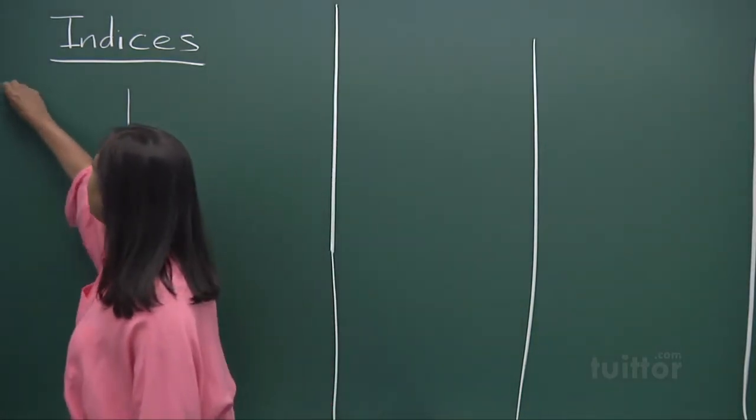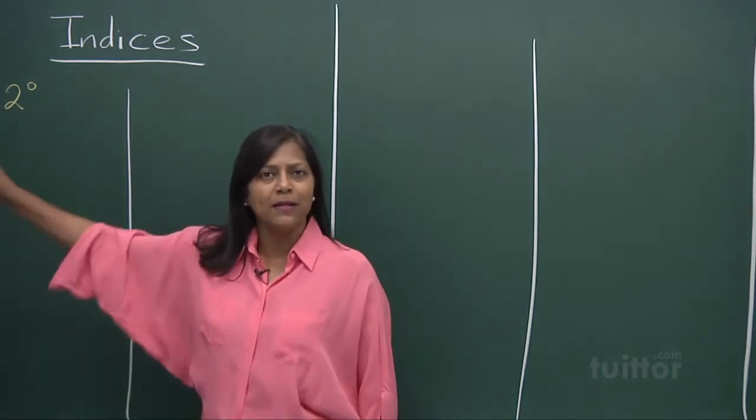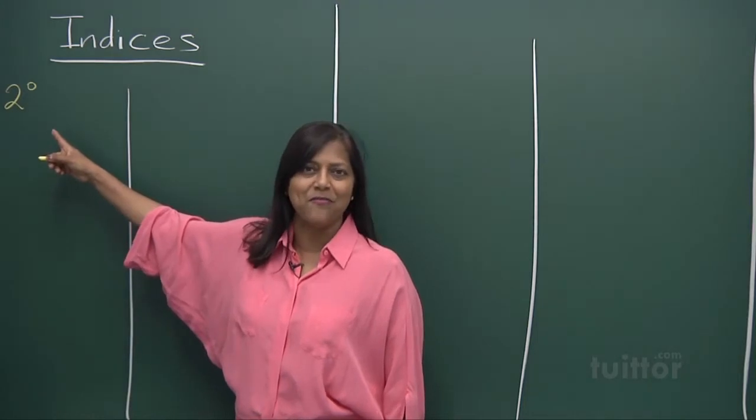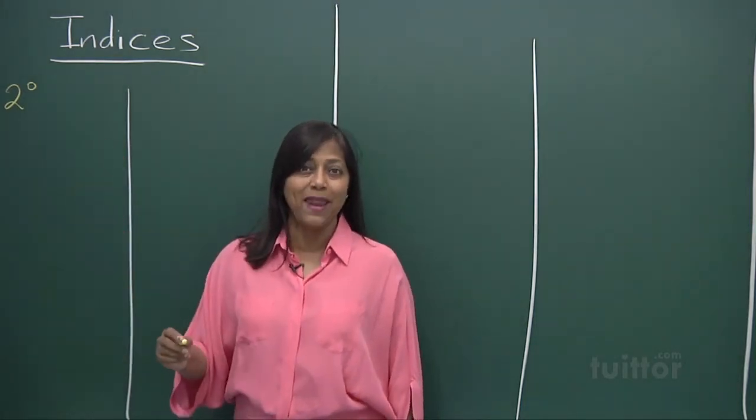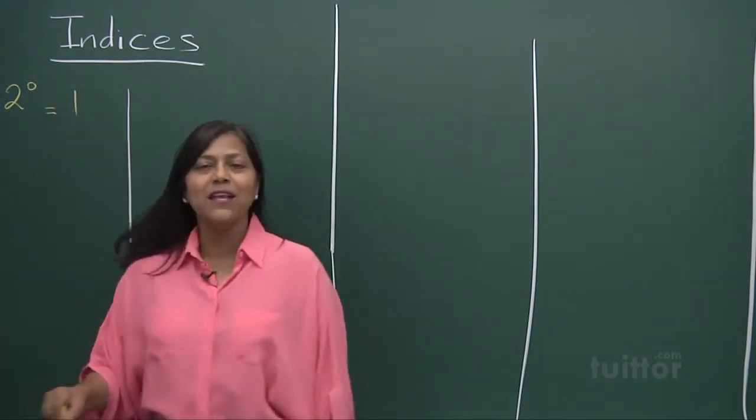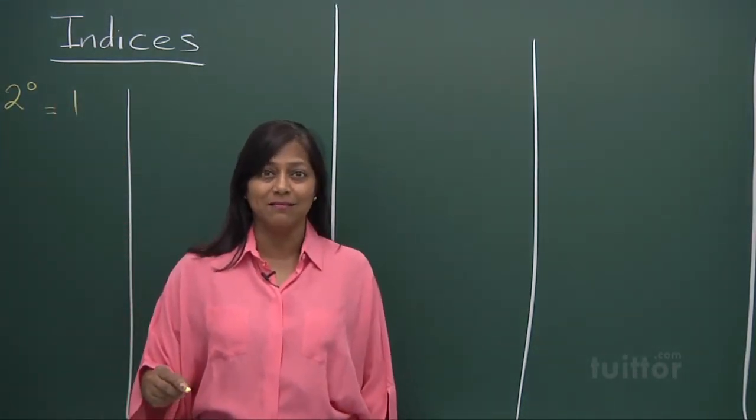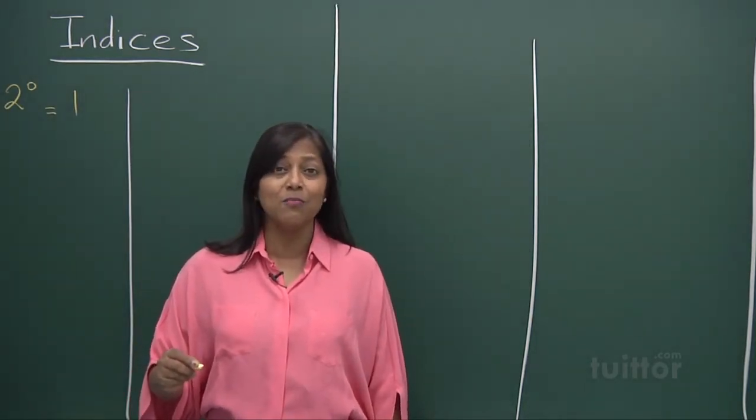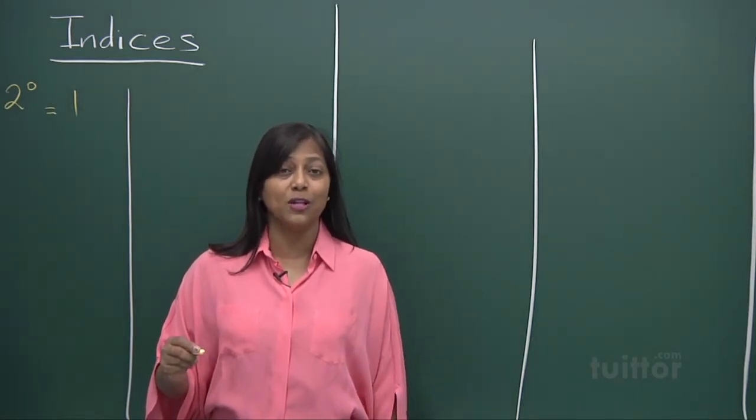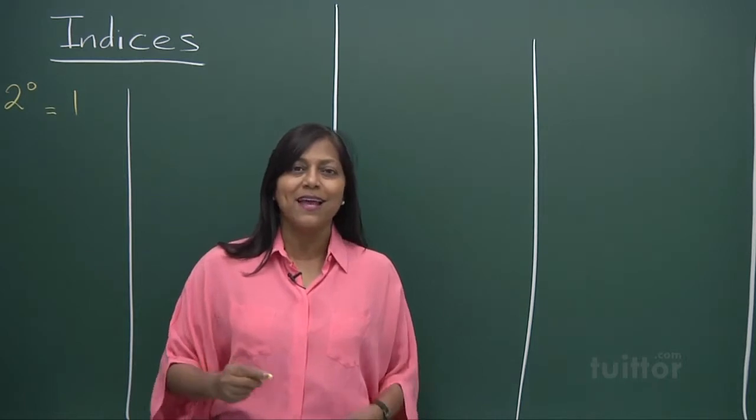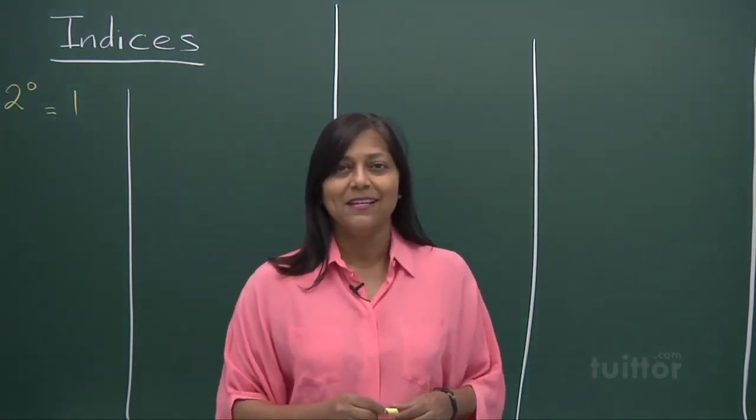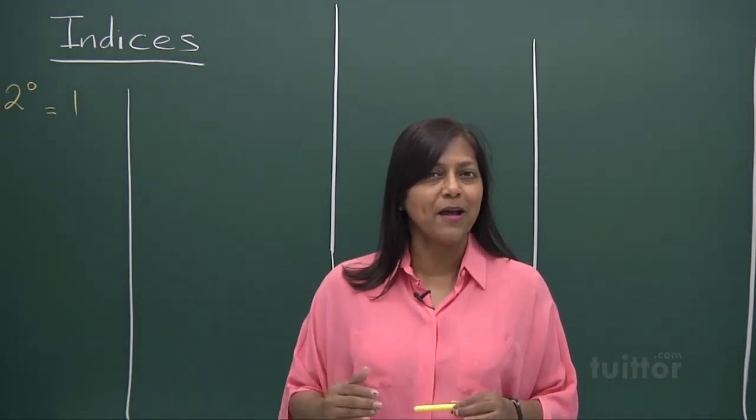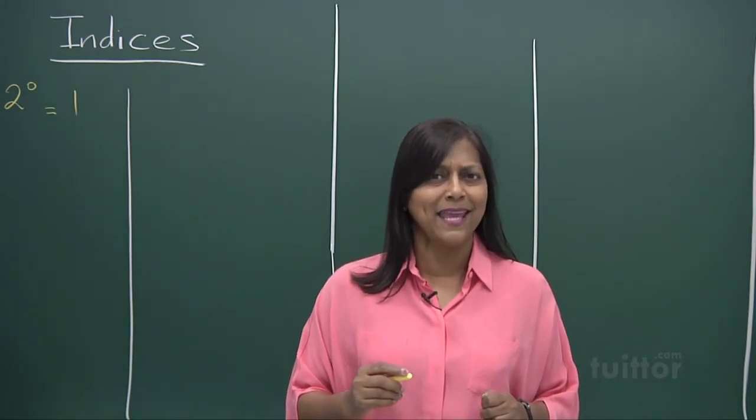When we talk about indices, we talk about a number with a power. Anything, any number to the power of 0 is equal to 1. If I said I had a thousand to the power of 0, it's still a 1. I'll tell you more about this as I go into the laws of indices. But let's first get the tables right. The tables that you're going to learn are the powers of 2 from 0 right up to 12. Let's find out how easy it can be.